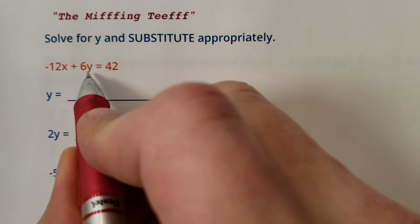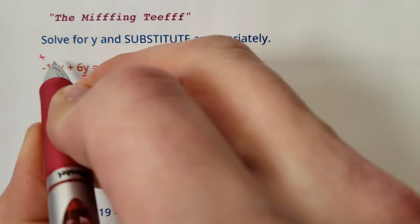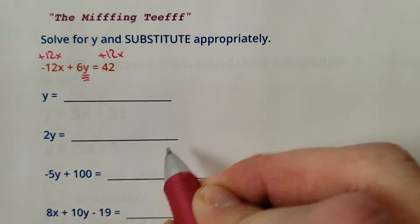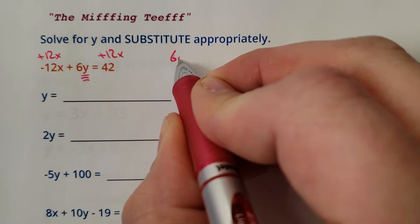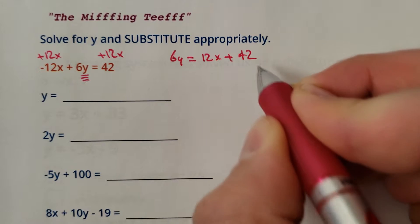So solve for y. What do you mean solve for y? Isolate y. Get y all by itself. I'm going to add 12x to both sides. So I'll rewrite here. We'd have 6y equaling 12x plus 42.